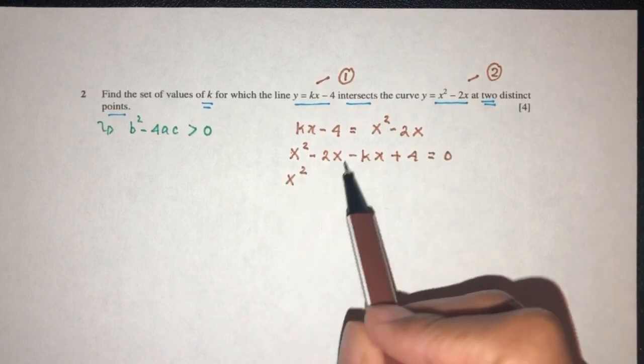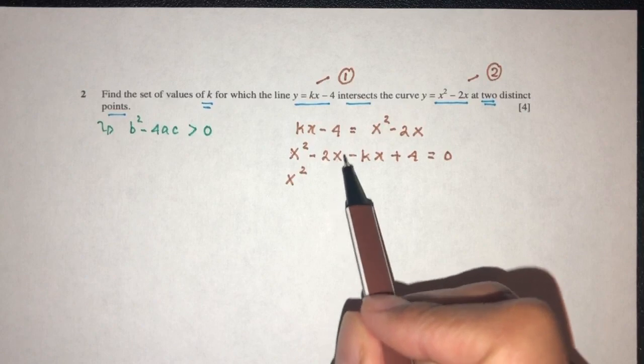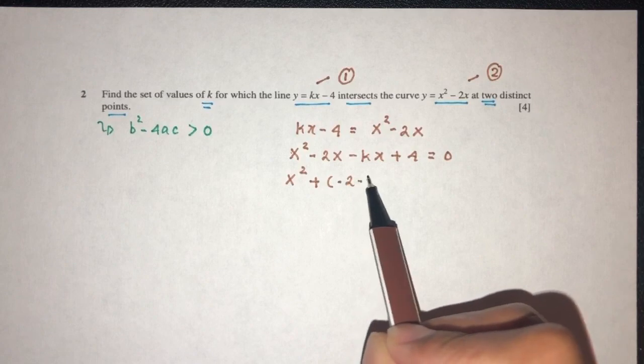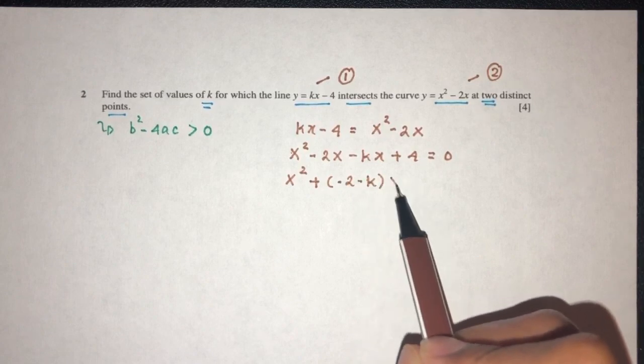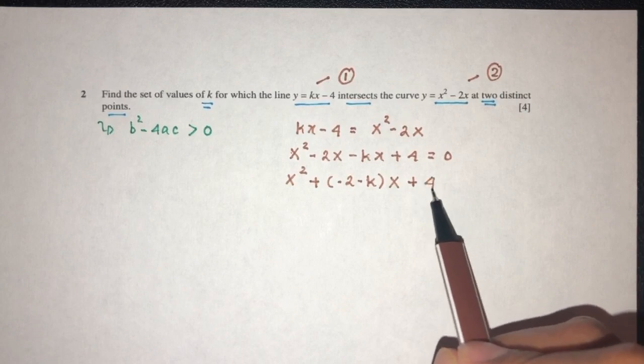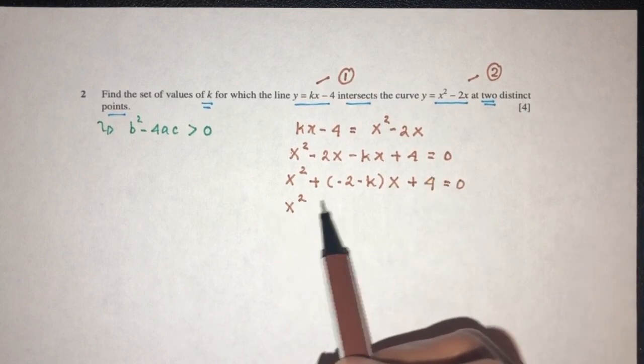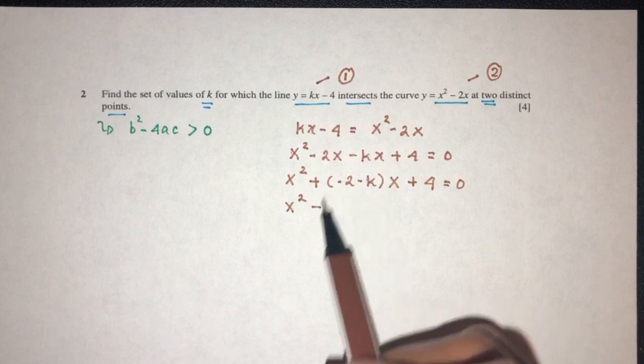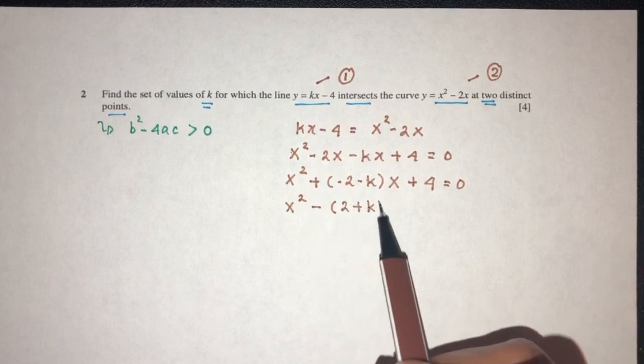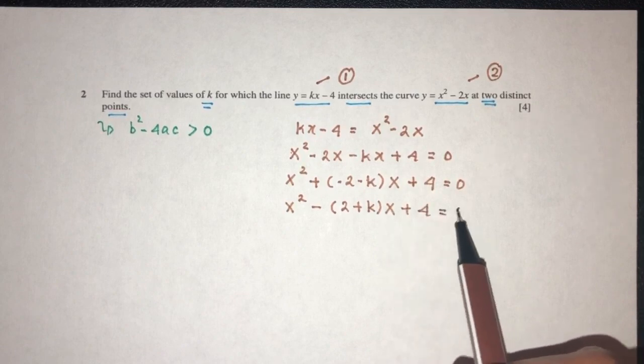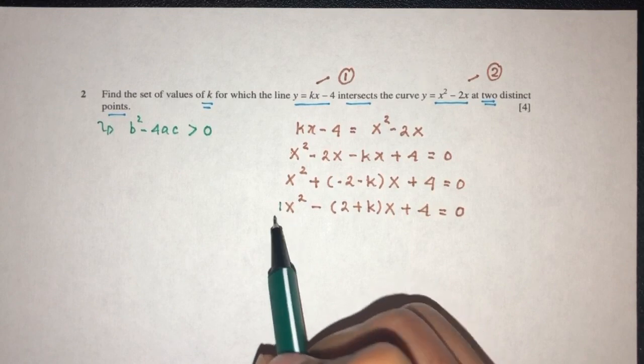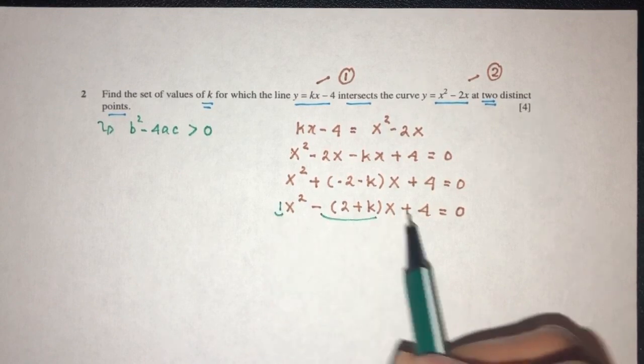Simplify x². Now we can take out the value of minus, so our value of x you will have plus minus 2 minus k times x. So x will be factorized outside, and then we have plus 4 equal to zero. Then again we can still factorize. Take out minus, you will have -(2 + k)x + 4. Now we have this equation, we can write down the values: this is a, this is b, and this is c.